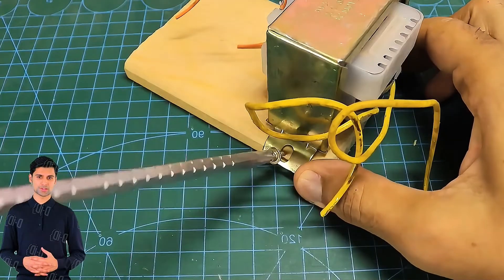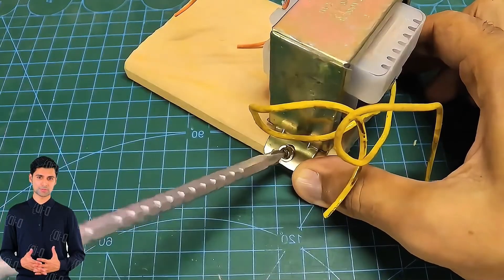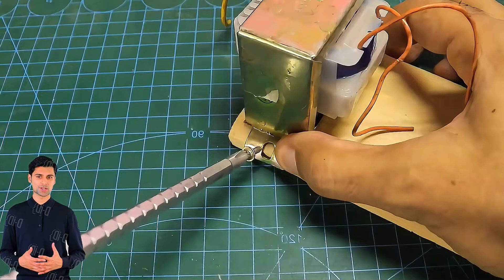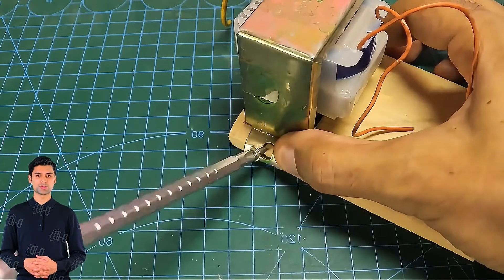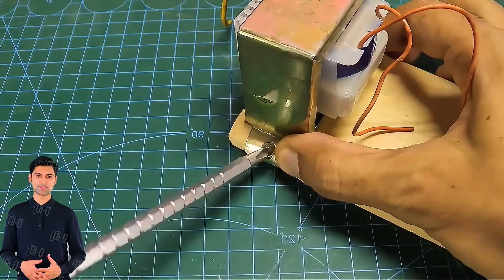The output current of the transformer can be used if it is lower or higher. It just affects the charging speed of the capacitor. The higher the output current of the transformer, the faster the capacitor can be charged. In this way, it can be charged in time for continuous spot welding.